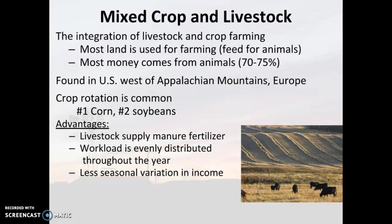While you make a whole lot of crops, you're not actually selling them. A lot of the crops are actually going to go to feeding your livestock. Livestock is where the majority of your income is going to come from — selling your livestock for animal products, usually to larger processing plants, makes up about 70 to 75% of your income.